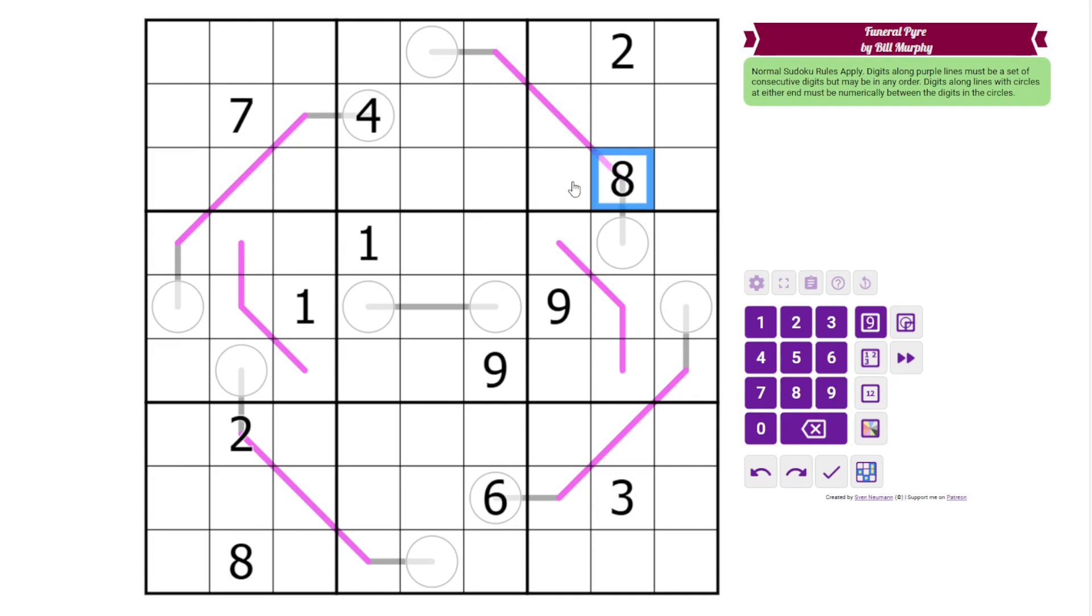All right, we're going to start with these clues. One thing to remember with between lines is if you ever have an eight or a two on the line, that means you have to have a nine or a one in a circle. Otherwise, these digits can't be between what's in the circles. You can never have one or nine on the line.